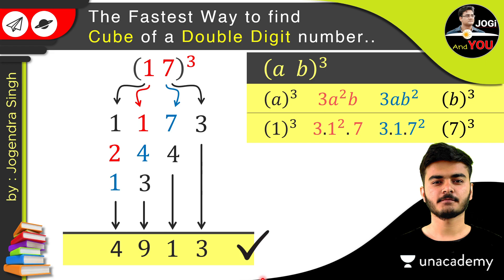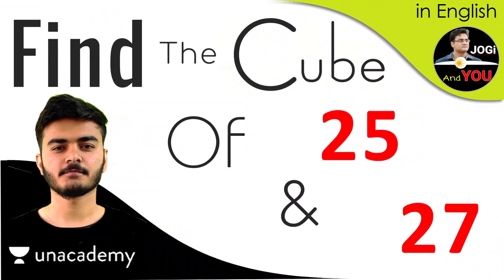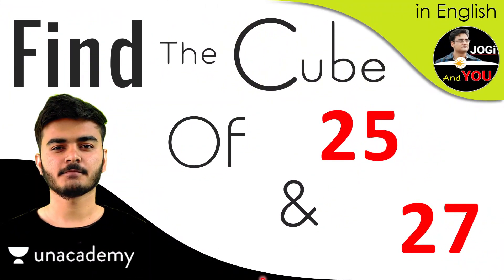But if you see, we have only some numbers here, but if you do 17 multiply by 17 multiply by 17, then your process will be lengthy. So all I want to say is if you want to do fast calculation, then you have to keep practicing for that, and you might be able to solve it verbally after practicing. And now I have a question for you: find the cube of 25 and 27, and find this cube with the same method without using a calculator. Calculate, practice, and write your answer in the comment box and let me know how brilliant you are.